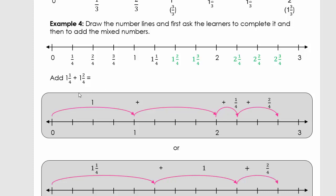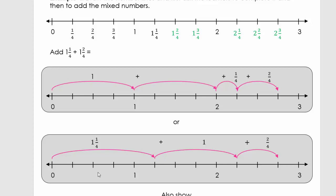We can use a pizza scenario: my mom bought pizzas — we had one and a quarter pizza and then one and two quarters pizza. How many pizzas did mom buy? You can also draw the number line starting from one quarter and then add one by adding four quarters, then add the remaining two quarters — you'll arrive at the same answer of two and three quarters. Pause here and use a scenario to explain both number lines.